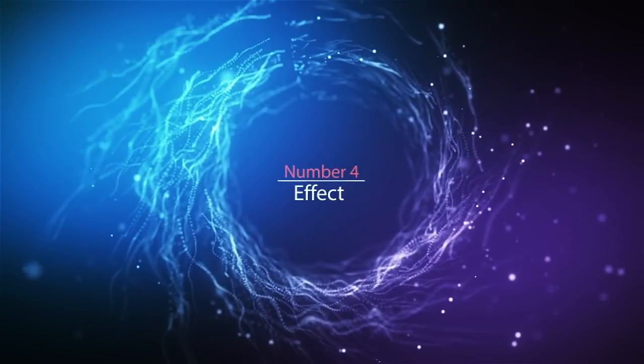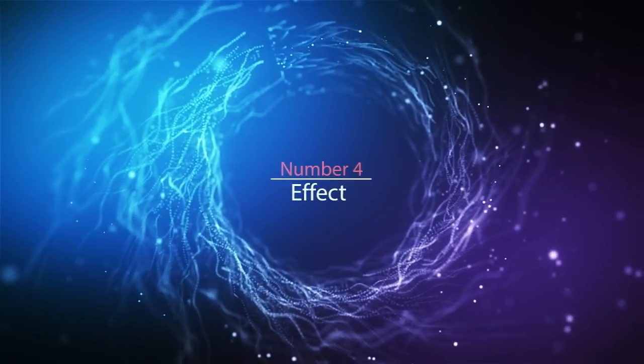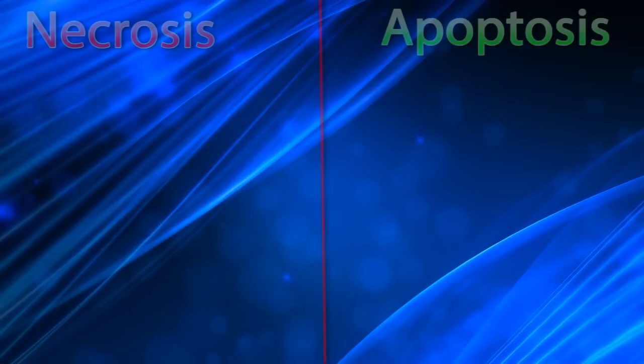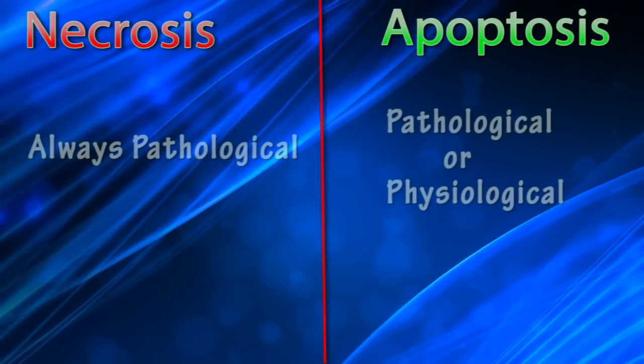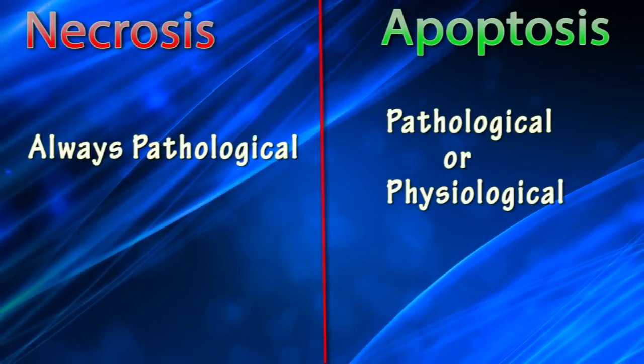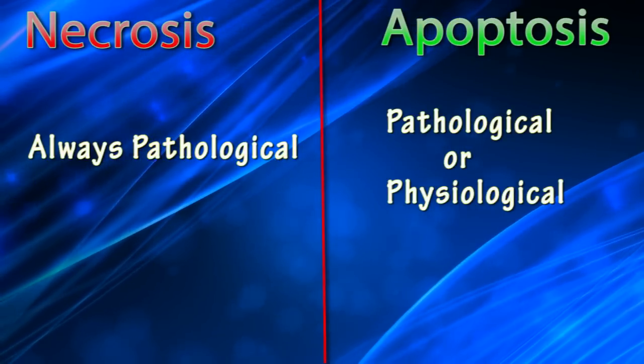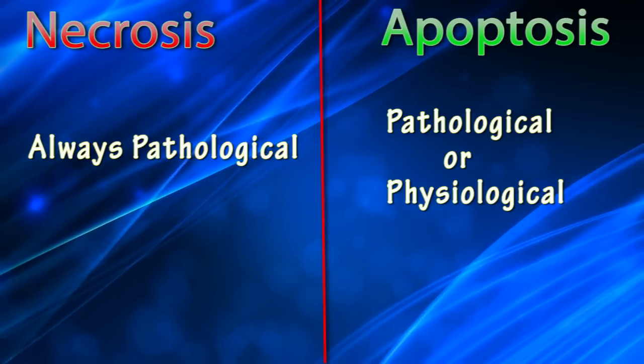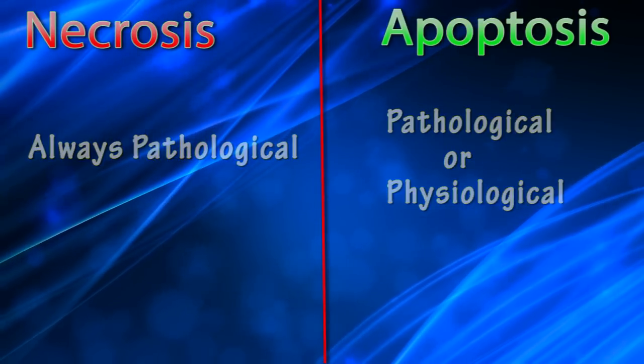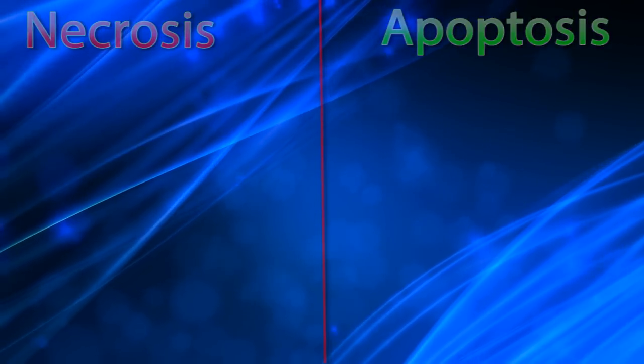Difference number four: effect. The necrosis process is always pathological, but apoptosis can be pathological or physiological.